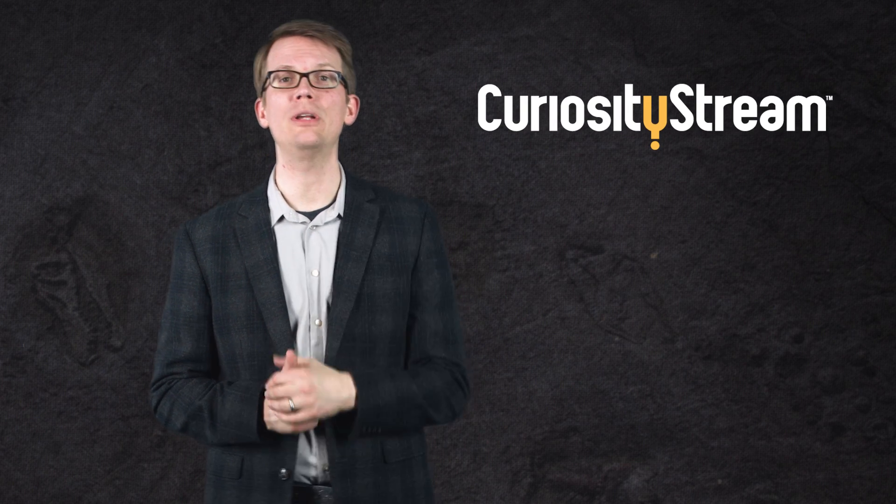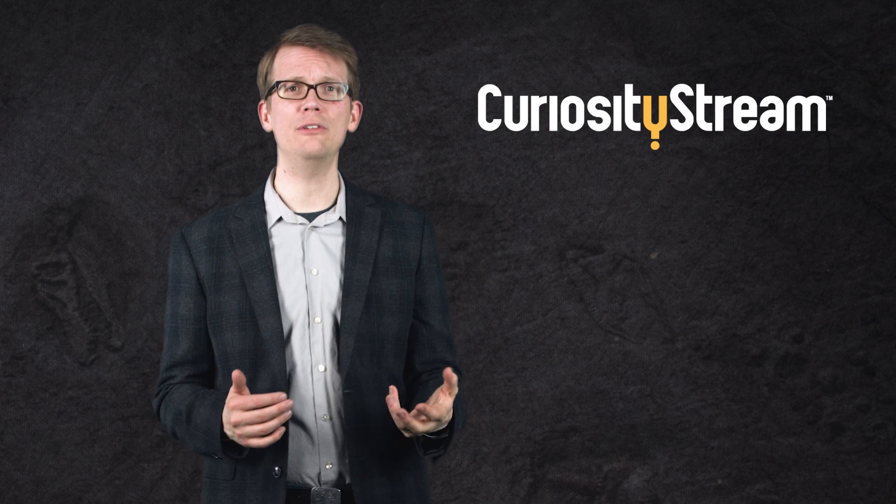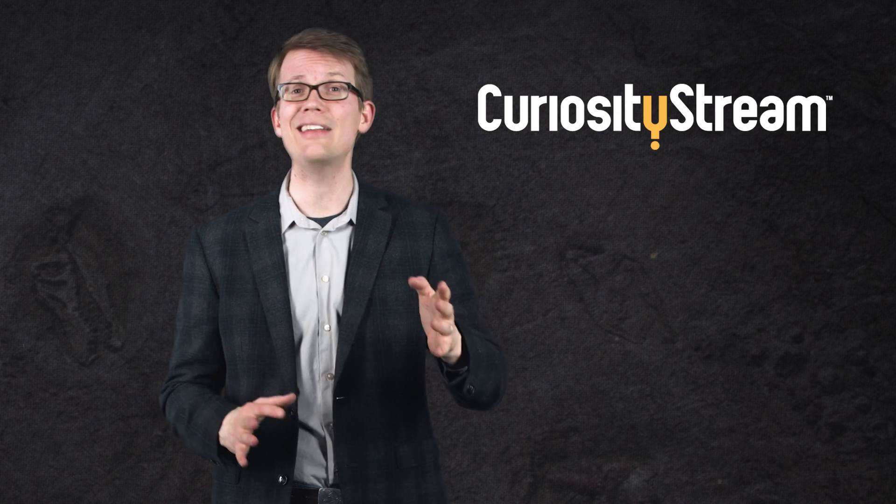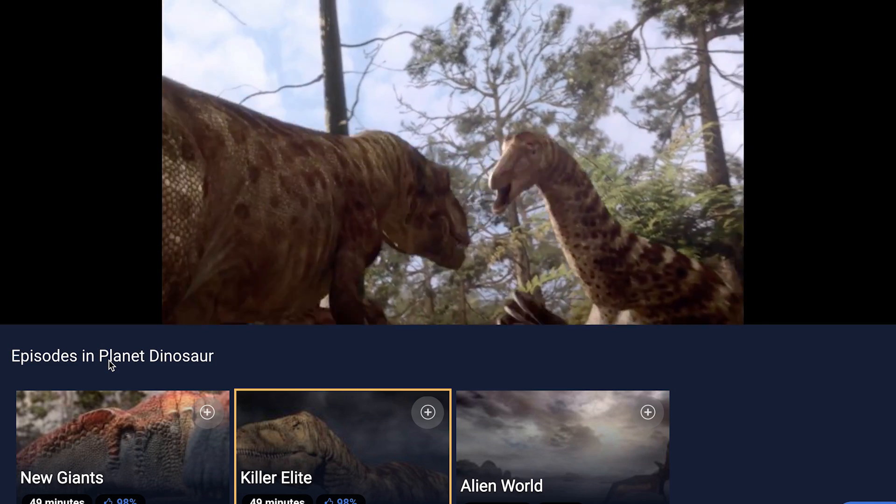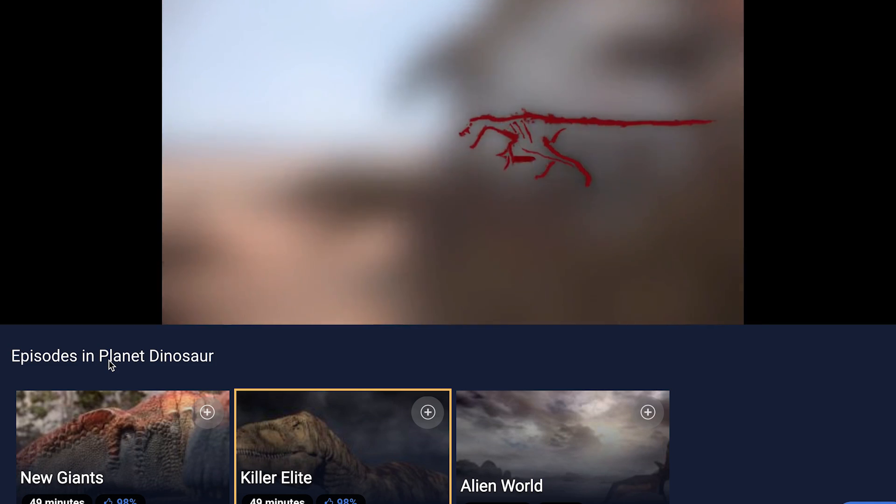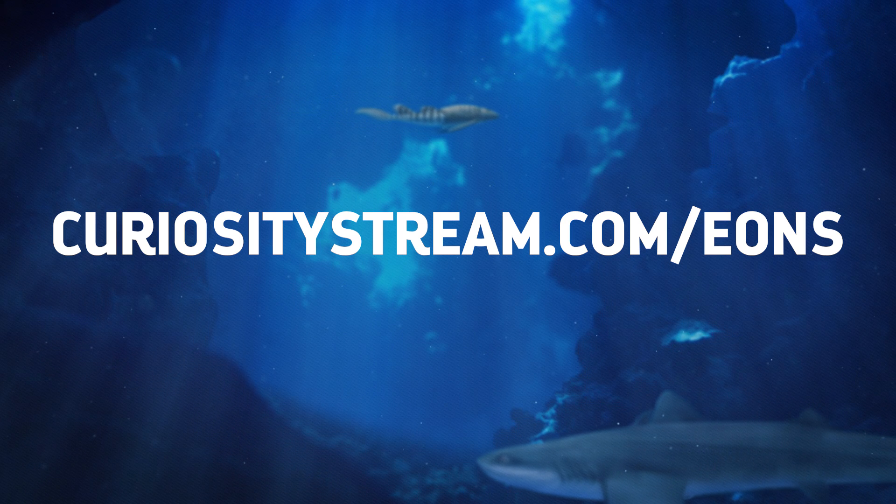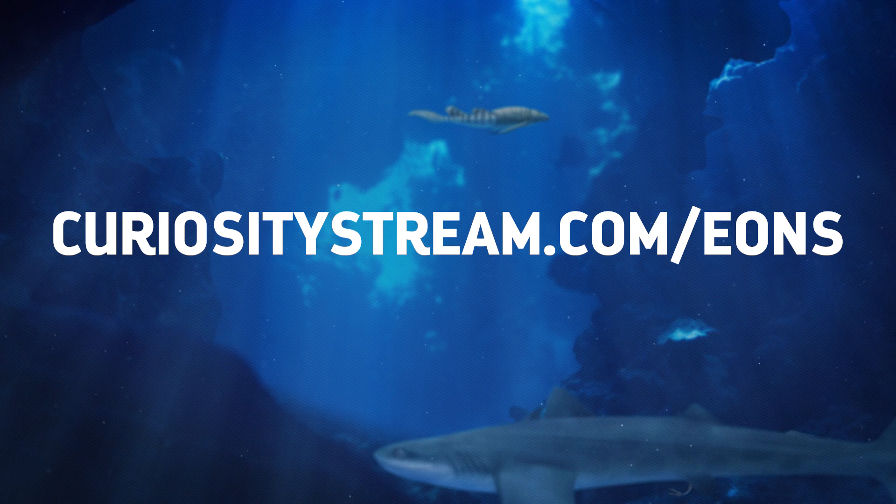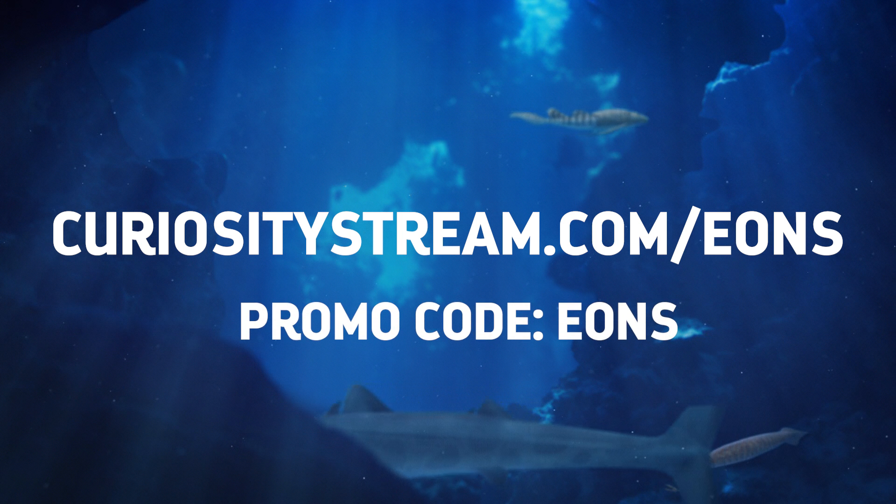Thanks to CuriosityStream for supporting PBS Digital Studios. With CuriosityStream, you can stream documentary films and programs about science, nature, and history, including exclusive originals. For example, you can check out Planet Dinosaur, a three-part BBC series about the latest discoveries from the days of the non-avian dinos. CuriosityStream offers unlimited streaming, and for Eons viewers, the first two months are free if you sign up at CuriosityStream.com/Eons and use the promo code EONS.